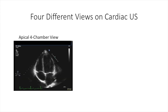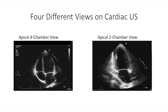The apical four-chamber view is necessary for TDI, and it allows you to measure the mitral annular velocity of the septal and lateral walls of the left ventricle. Finally, we have the apical two-chamber view, which is also necessary for tissue Doppler imaging. It allows you to measure the other two walls of the left ventricle: anterior and inferior.